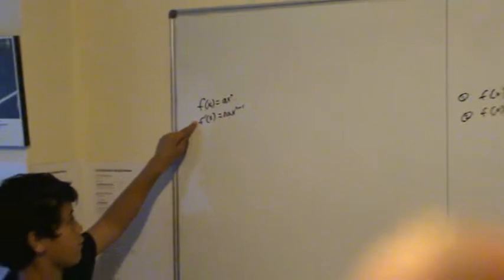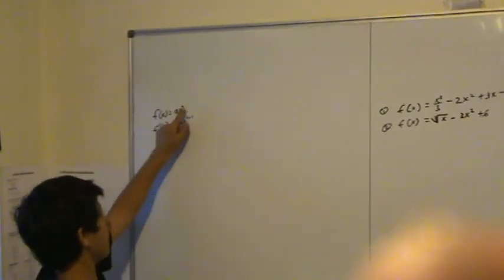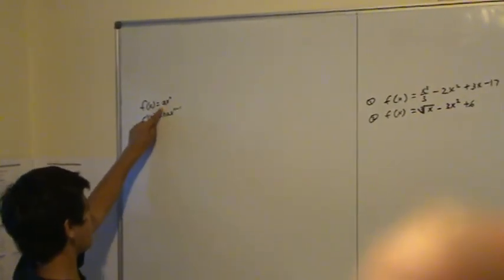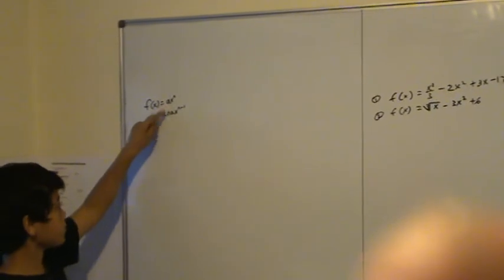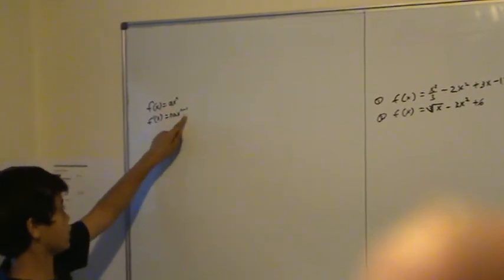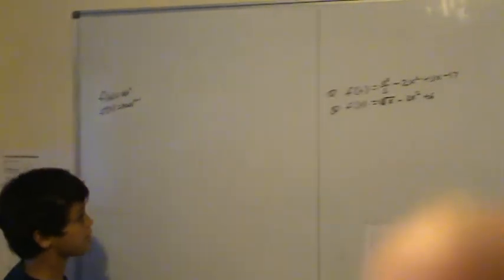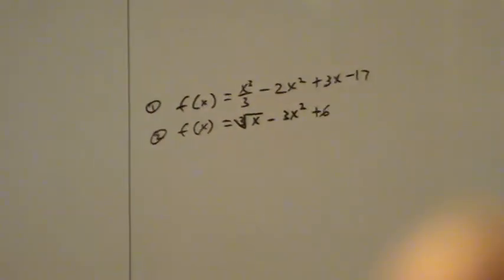This is the general polynomial form and this is its differentiation. You bring the power to the front and multiply it, and then you subtract 1 from the power. I'll start with equation 1 because it's the easiest.